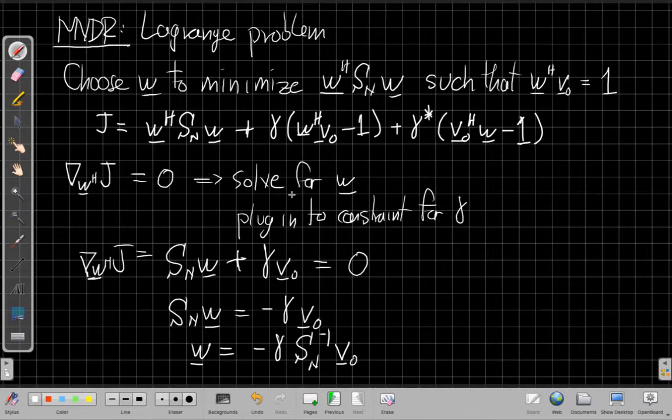Now I need to come back up to the constraint equation to solve for what gamma is. I need to put this in for W up here and figure out what gamma is. So let's start on a clean page for that.